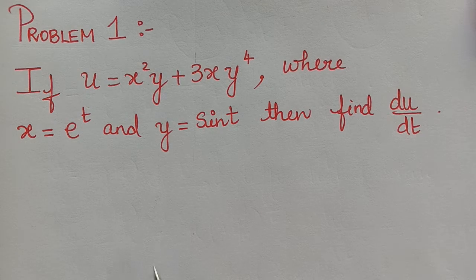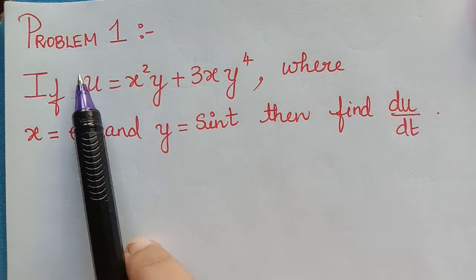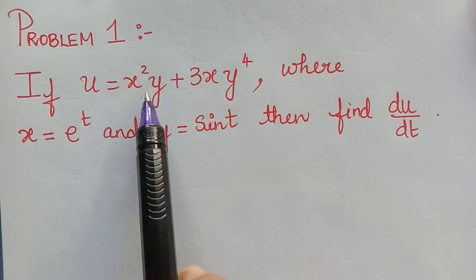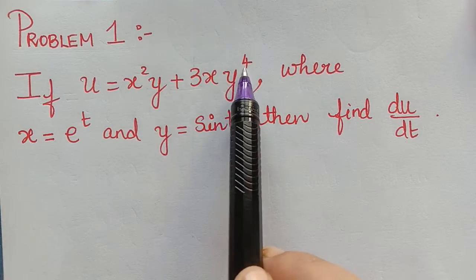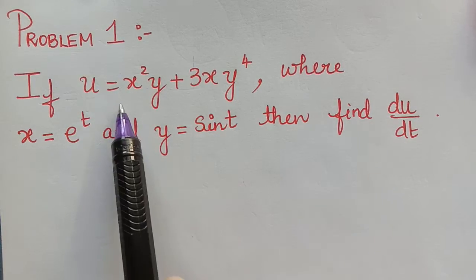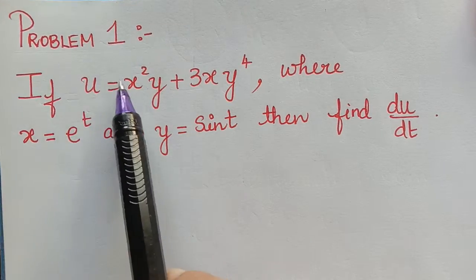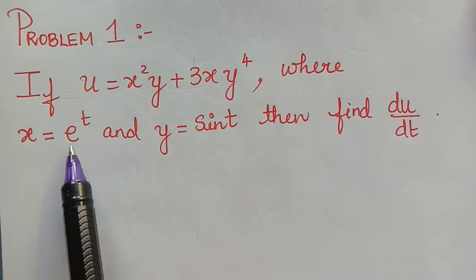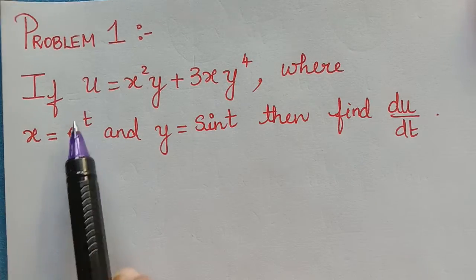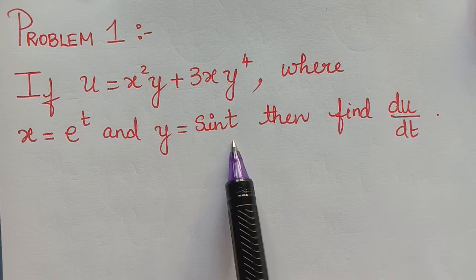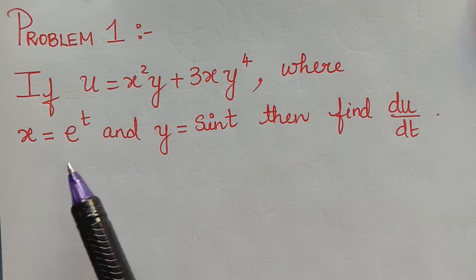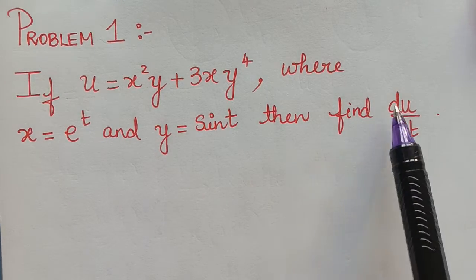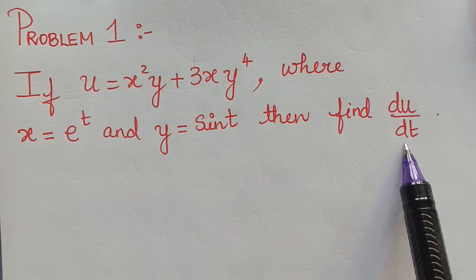Here we have the first problem on this topic. If u = x²y + 3xy⁴, we observe that u is a function of x and y, where x = eᵗ and y = sin t, i.e., x and y are functions of t. Find du/dt.